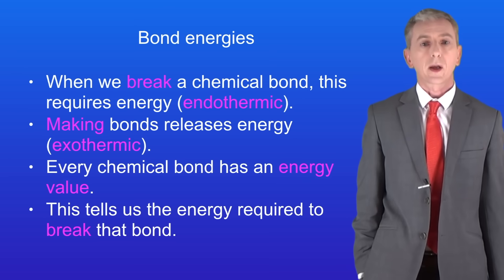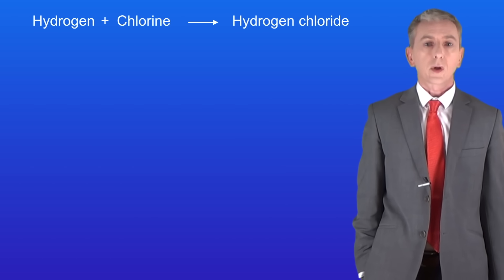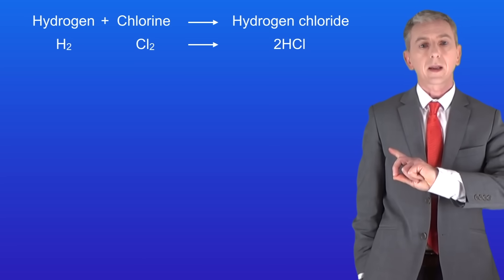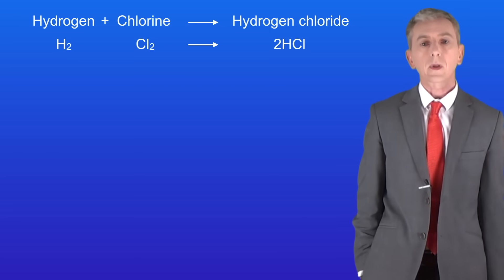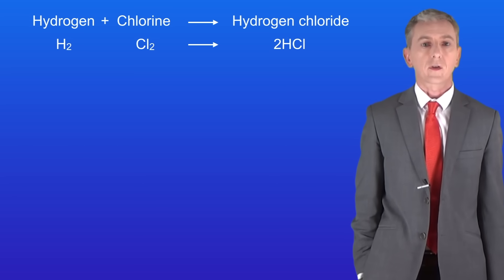So we're going to start by looking at a sample question. Hydrogen plus chlorine produces hydrogen chloride. Here's the balanced symbol equation. We're going to calculate the energy change for this reaction.